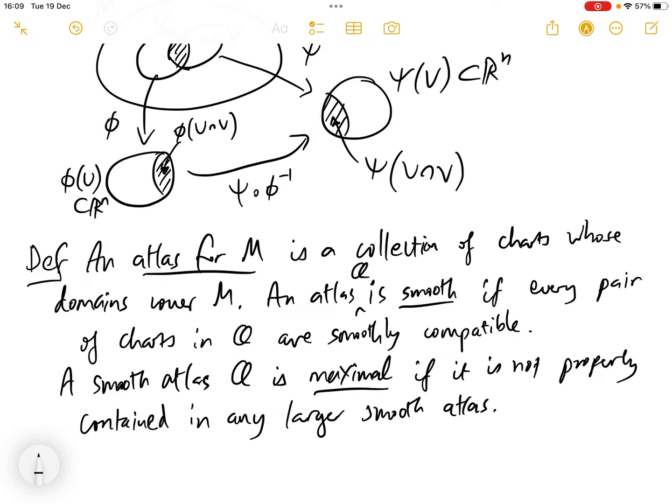So why consider maximal smooth atlases? Well, the problem is if we restrict our attention just to smooth atlases, then it would be the case that some smooth atlases define the same smooth structure on the manifold. What I mean by that is we could write down different atlases for a certain manifold for which the same functions f will be smooth. So what we do is we instead consider maximal smooth atlases so that each maximal smooth atlas defines a unique smooth structure on M and therefore uniquely determines which functions on the manifold are smooth.